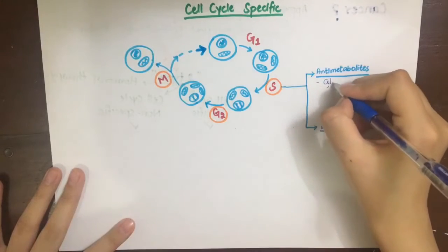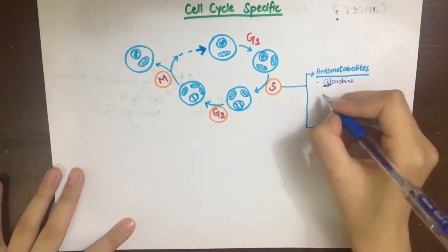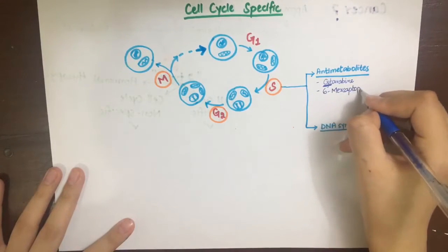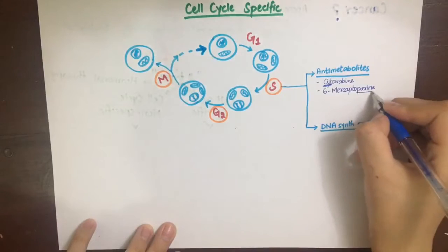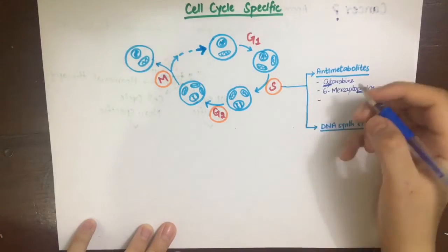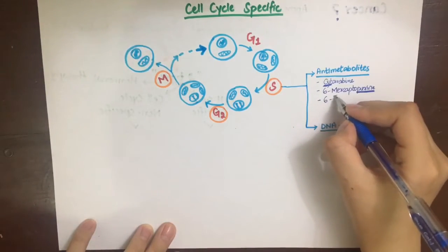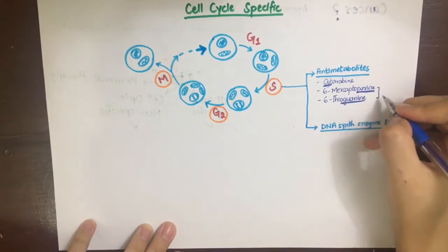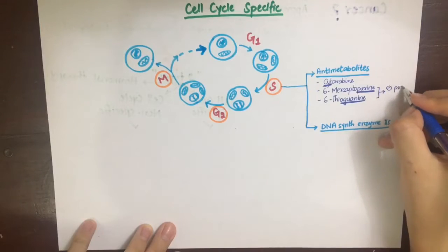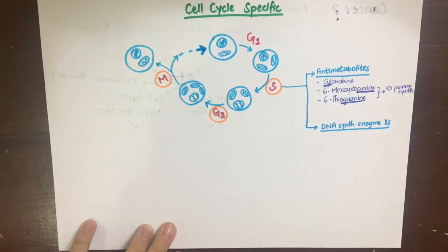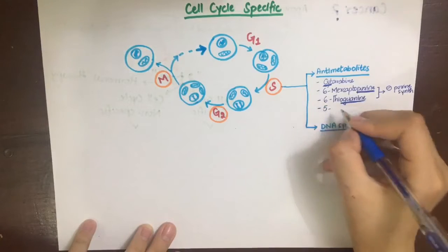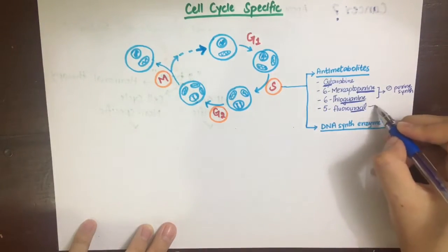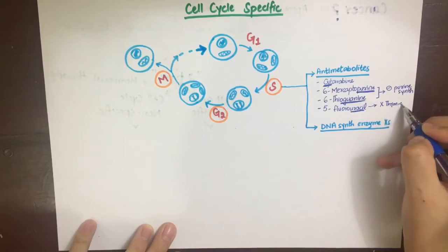Cytarabine is a cytosine analog and competes with cytosine. 6-mercaptopurine and 6-thioguanine are purine analogs that inhibit purine synthesis. 5-fluorouracil inhibits the enzyme thymidylate synthase, which is essential for making thymine and thus DNA. By inhibiting this enzyme, the cell cannot replicate its DNA.